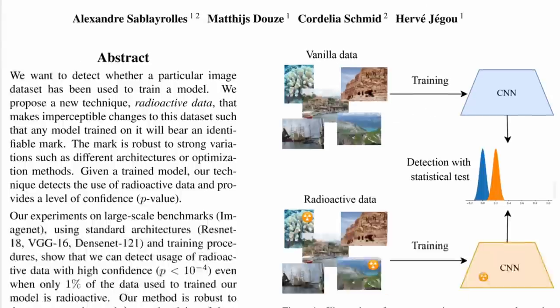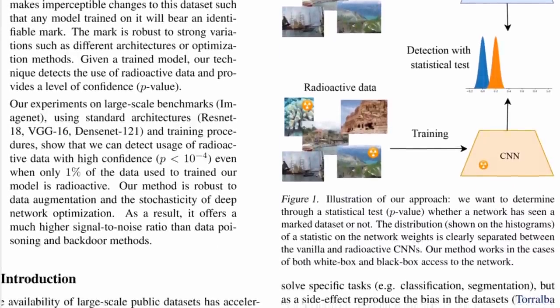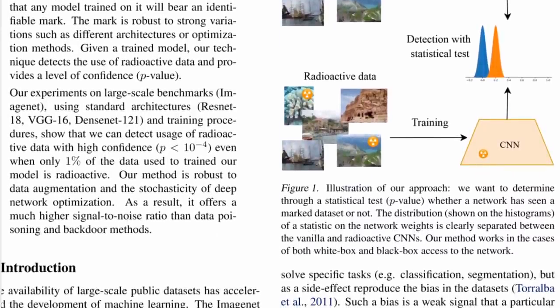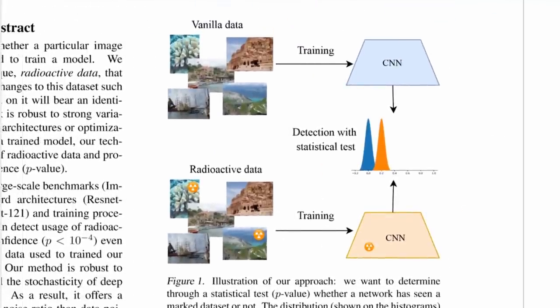They call this process radioactive marking, or radioactive data for short. The concept is pretty easy and it's a nice concept. It's been around in one form or another — it touches on adversarial examples and on differential privacy.